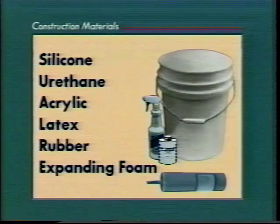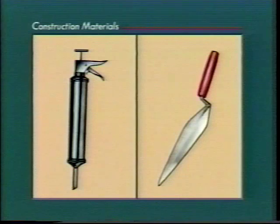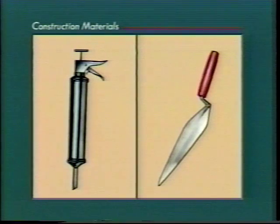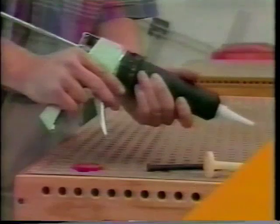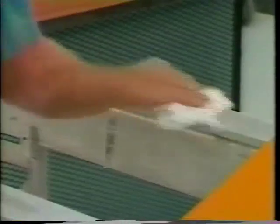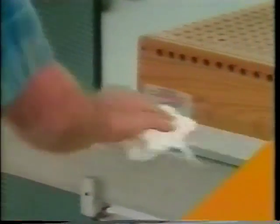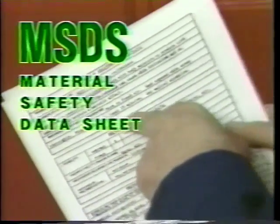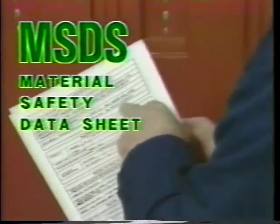The tools most often used to apply sealants are a caulking gun or a trowel. For proper sealing, most sealants require that the surface is clean. Before using any sealant, read the material safety data sheet.